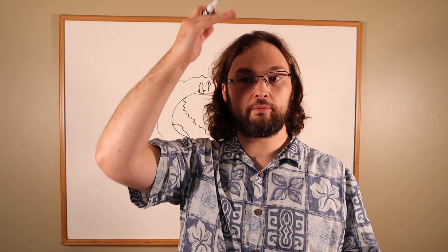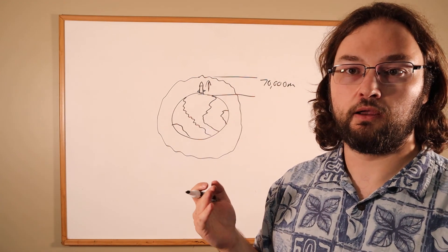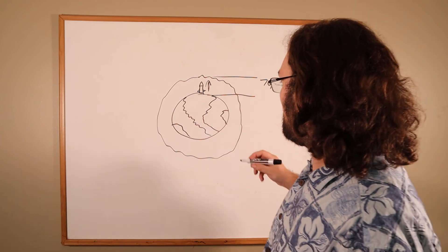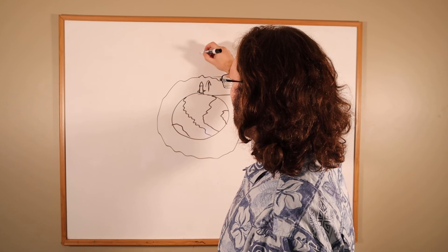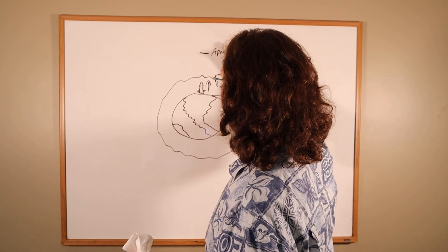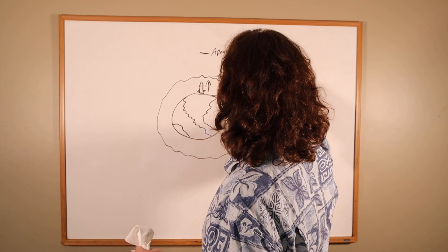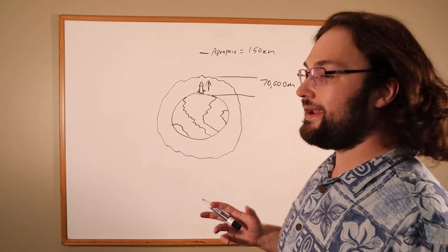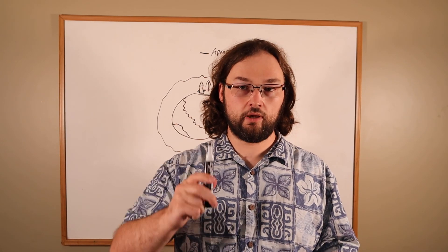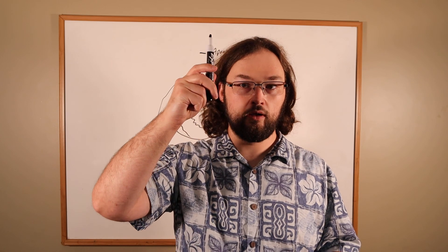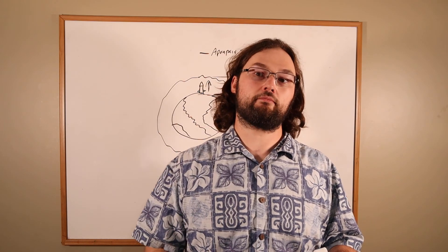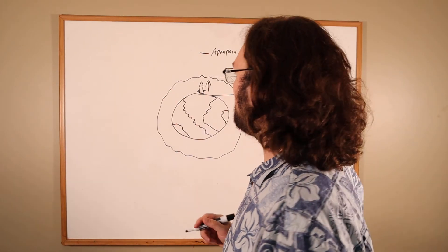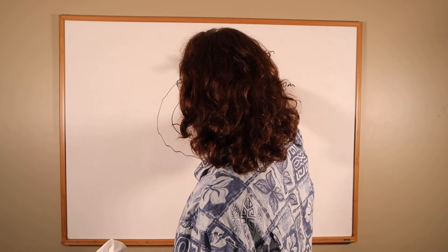We don't just want to peak out above the atmosphere and then immediately fall back down into the atmosphere again. So we'll burn until our apoapsis is at 150 kilometers, well outside of the atmosphere, and then we shut off the engines and wait for the rocket to coast. It's going to slow down as it's going up, and when it gets to 150 kilometers it would stop and then start falling straight back down.